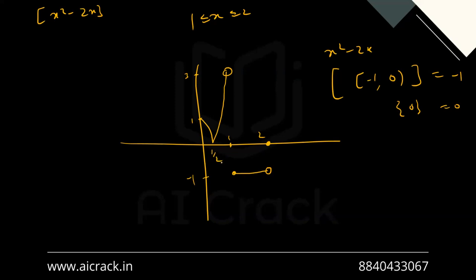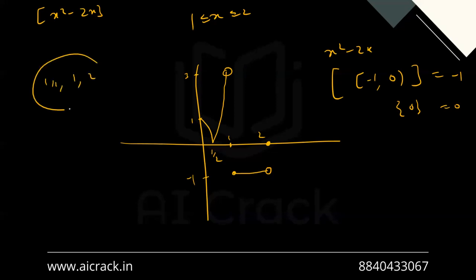So we've obtained three non-differentiable points: x = 1/2 (due to a sharp edge from the modulus), x = 1 and x = 2 (both due to discontinuities from the GIF).